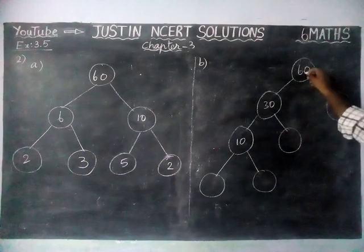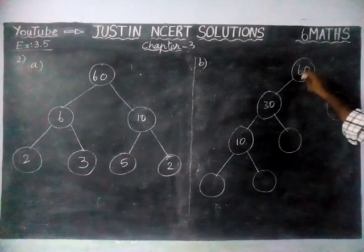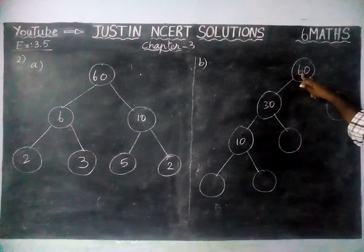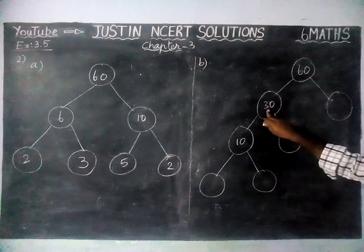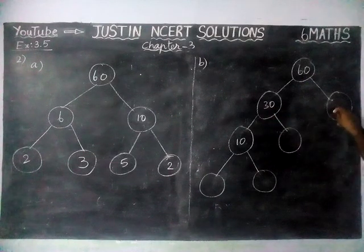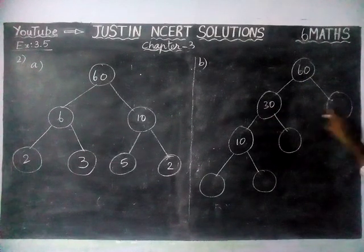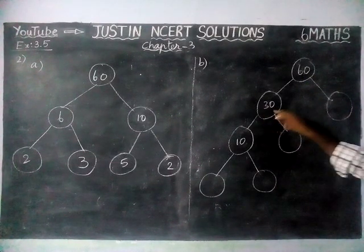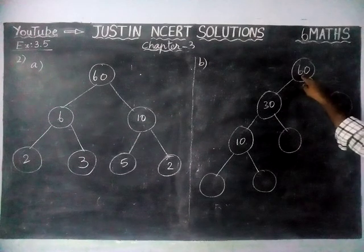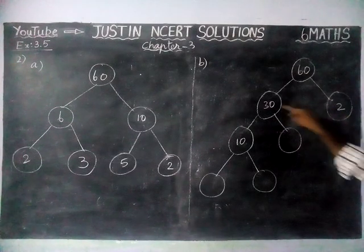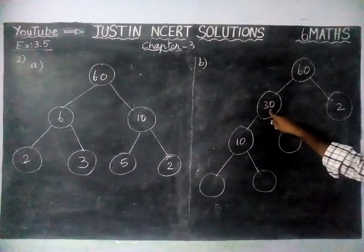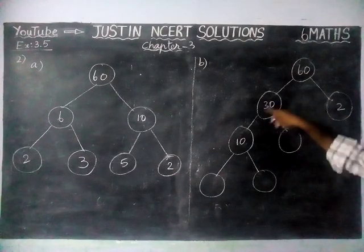Now, 60 is given and we are going to separate it using another method. 30 and another number — 30 twos are 60. 2 is a prime number. 30 is not a prime number.